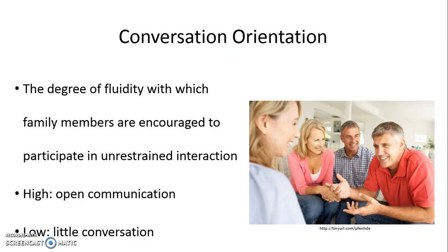The first scale is the conversation orientation. This is the degree to which family members feel like they can have unrestrained interaction with each other — how openly they can communicate, or if not, how much restriction needs to be placed on their communication. If you have a really high conversation orientation, you and your family members feel free to talk about almost anything. You have open dialogue.